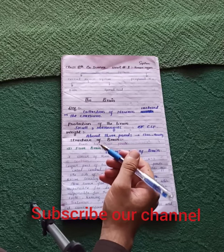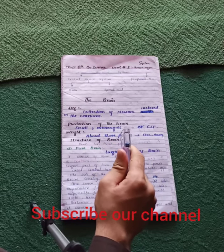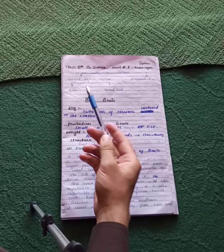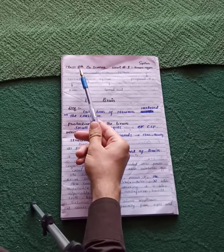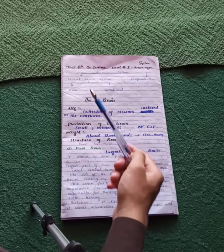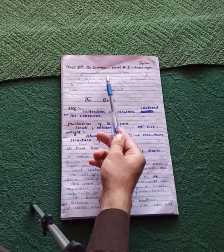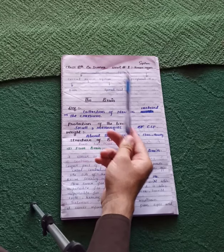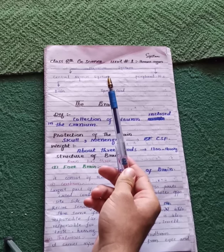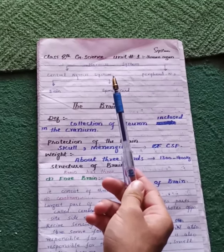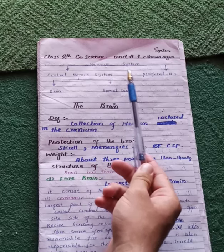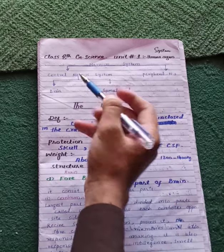Bismillah ar-Rahman ar-Rahim. Today in class 8 General Science, Unit number 1, Human Organ System, we are studying the topic: Division of the Nervous System. In our previous lecture, we covered neurons and the nervous system overview.